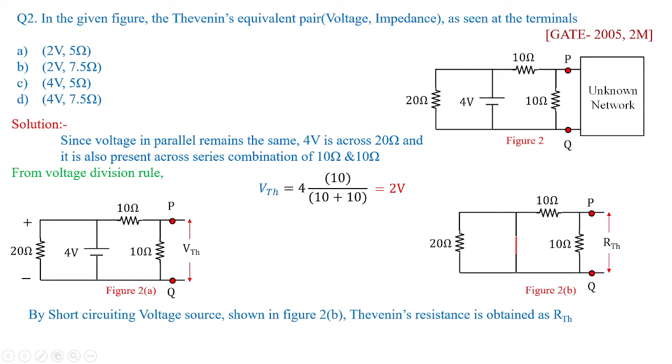For that I have removed the voltage source 4 volts and I have shorted the wire with this red line. Now we have to calculate the RTH. Once this is shorted, 20 ohms will be eliminated. In fact, you will be having 10 ohms parallel with 10 ohms looking through the terminal PQ. Hence RTH will be equivalent to 10 into 10 divided by 10 plus 10, that is 100 by 20, which will be obtained as 5 ohms. So here option A is the right answer.